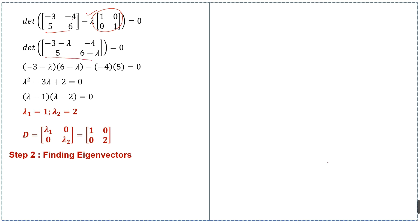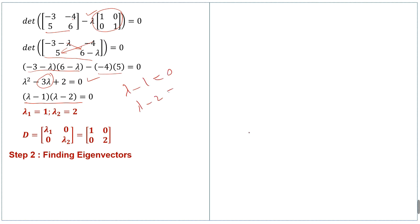After subtracting, we get the resulting matrix and find its determinant by cross-multiplying the entries. After simplification we get the characteristic equation, which we factorize by middle-term breaking. This gives (λ − 1)(λ − 2) = 0, so λ = 1 and λ = 2. We have two eigenvalues: λ₁ = 1 and λ₂ = 2.